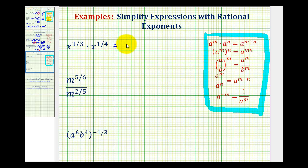So this is equal to x to the power of one-third plus one-fourth. But we know in order to add fractions, we have to have a common denominator. And if our denominators are three and four, the LCD, or least common denominator, would be 12.